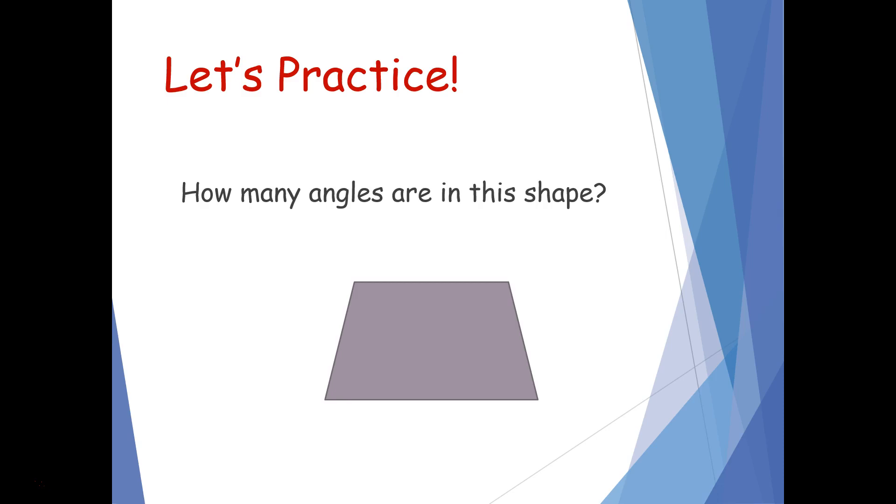Okay, boys and girls, let's see what we've got. I see here that when I look at this trapezoid that there's two lines that meet here, two lines that meet here, two lines that meet here, and two lines that meet here. I found all the places where the sides meet together and I count that there are one, two, three, and four. This trapezoid has four angles.